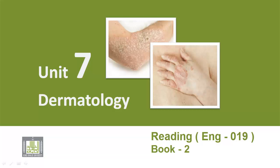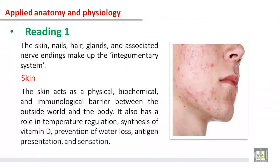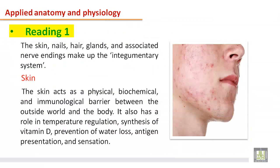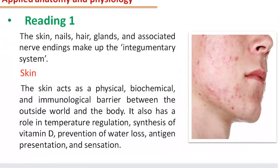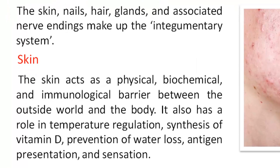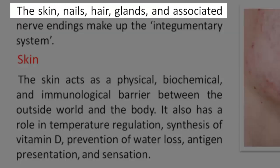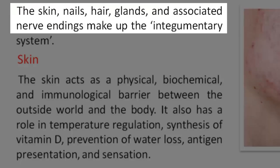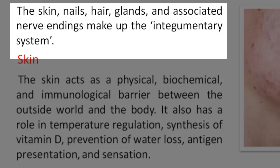Unit 7: Dermatology. Applied Anatomy and Physiology. Reading 1: The skin, nails, hair, glands, and associated nerve endings make up the integumentary system.